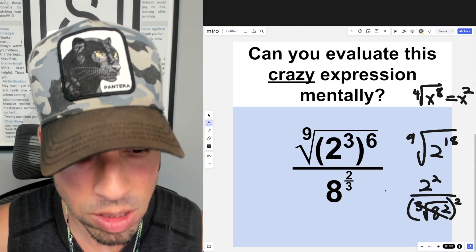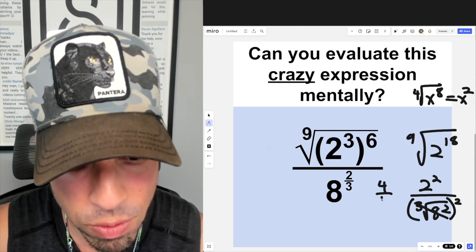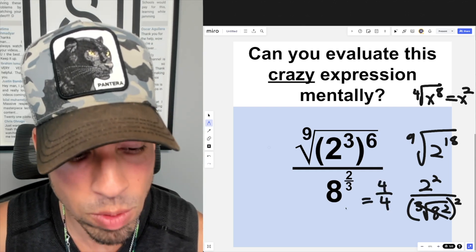2 squared on top is also 4, which means we're left with 4 over 4, which evaluates beautifully to 1, the loneliest number. That's how you do it, done!